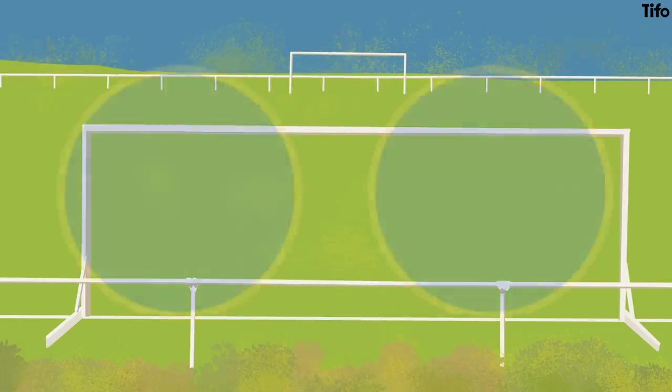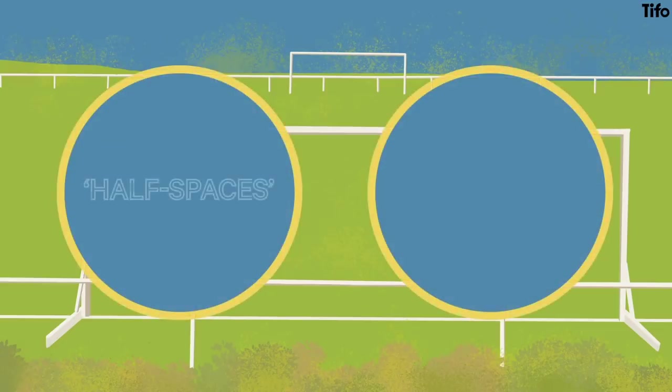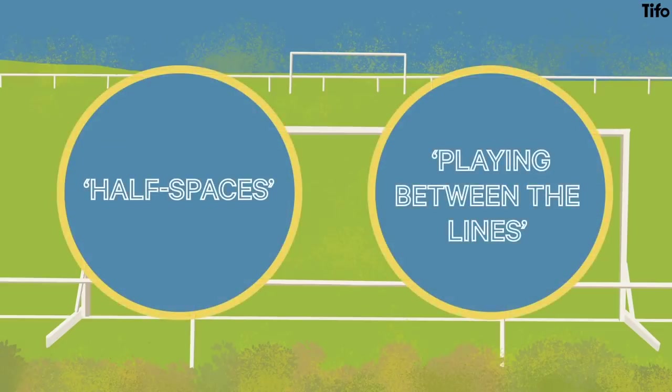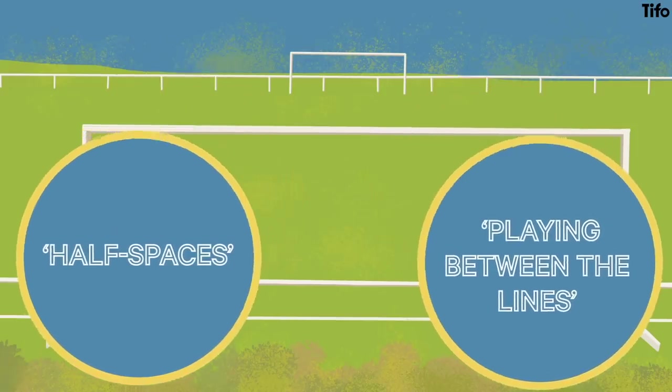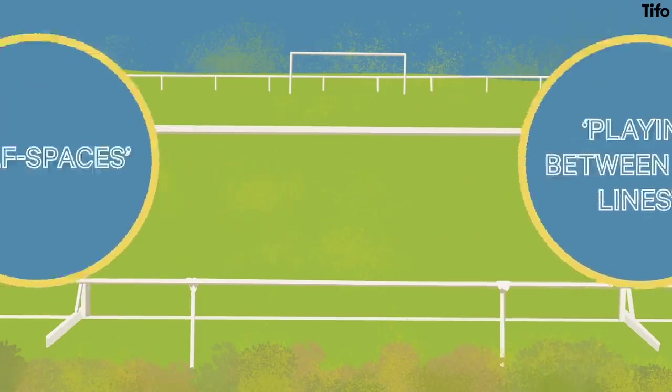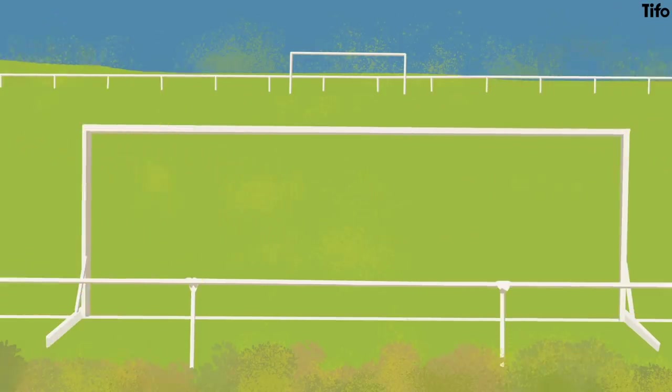Two examples of this are half-spaces and playing between the lines. These ideas are actually both very straightforward, and understanding what is meant by them and seeing past the jargon makes football quite a lot more understandable.